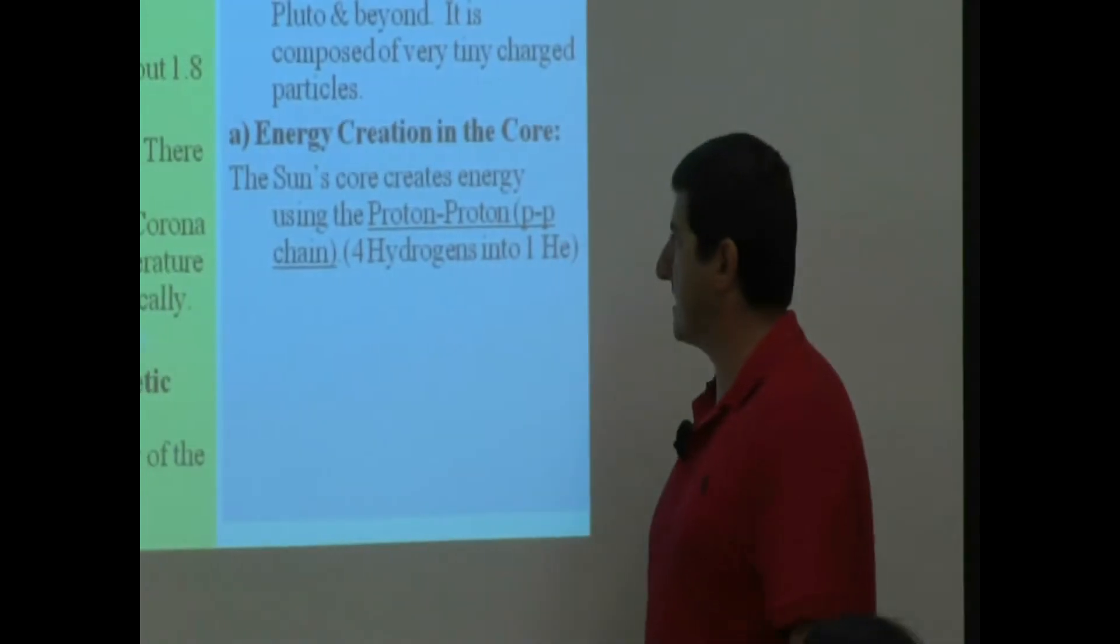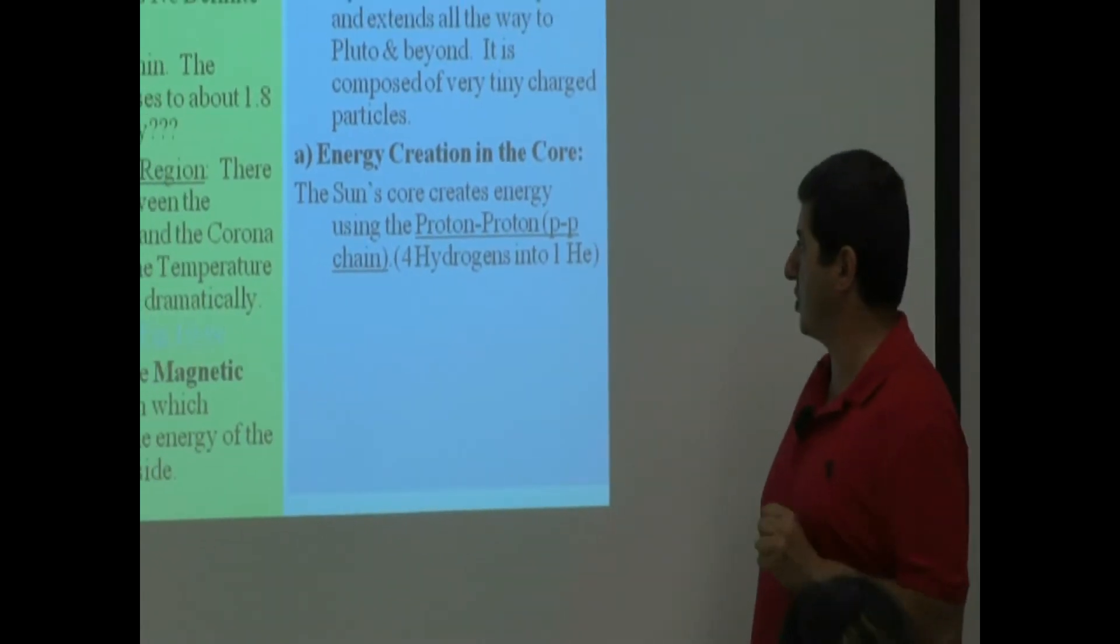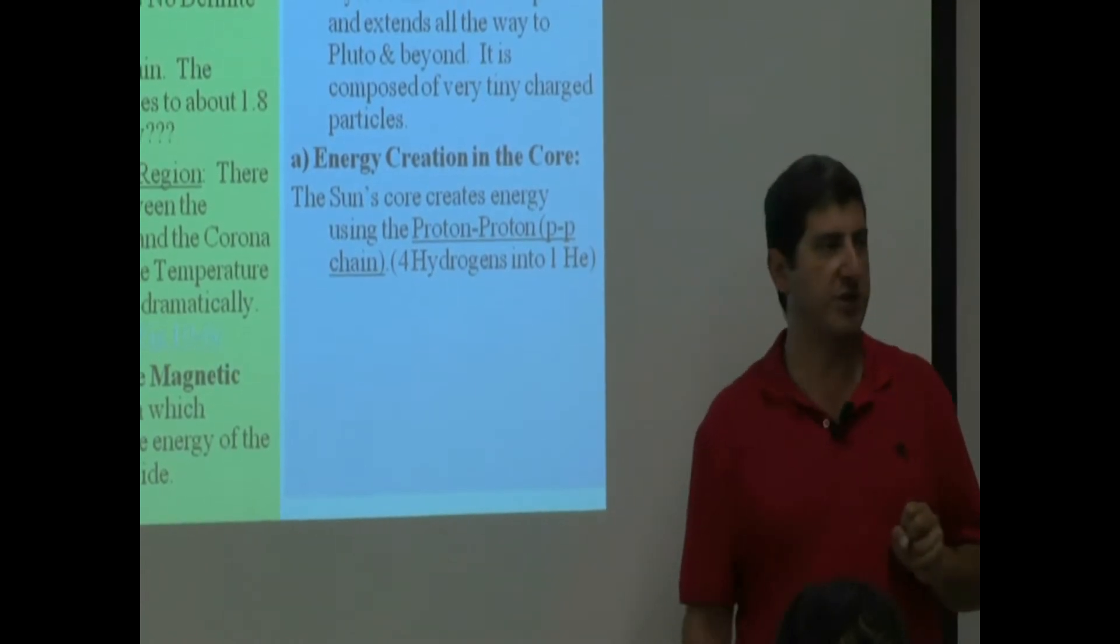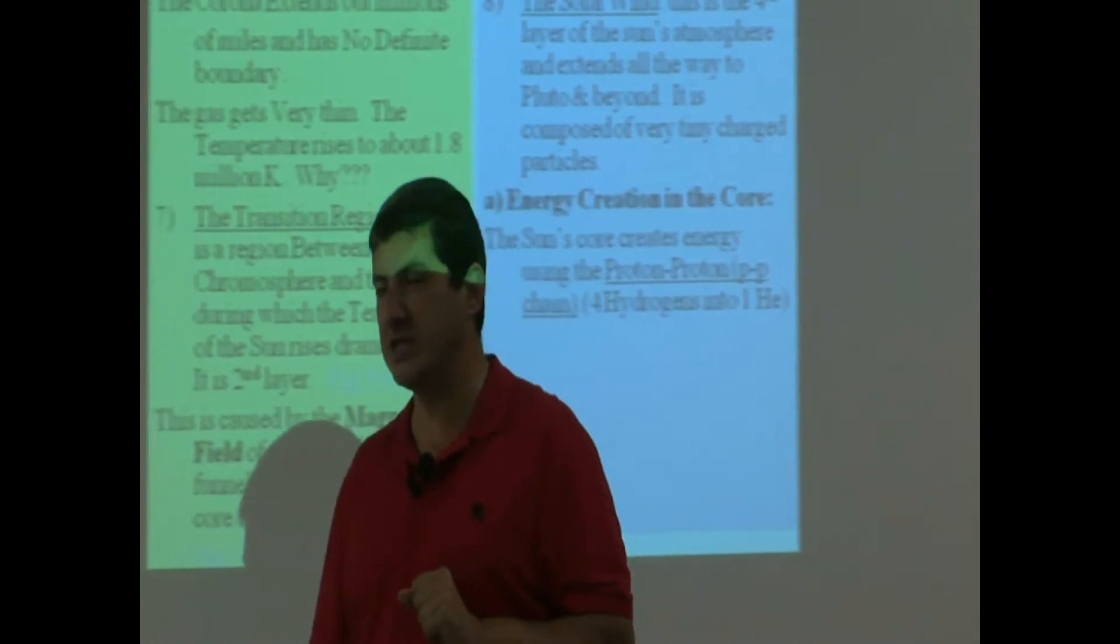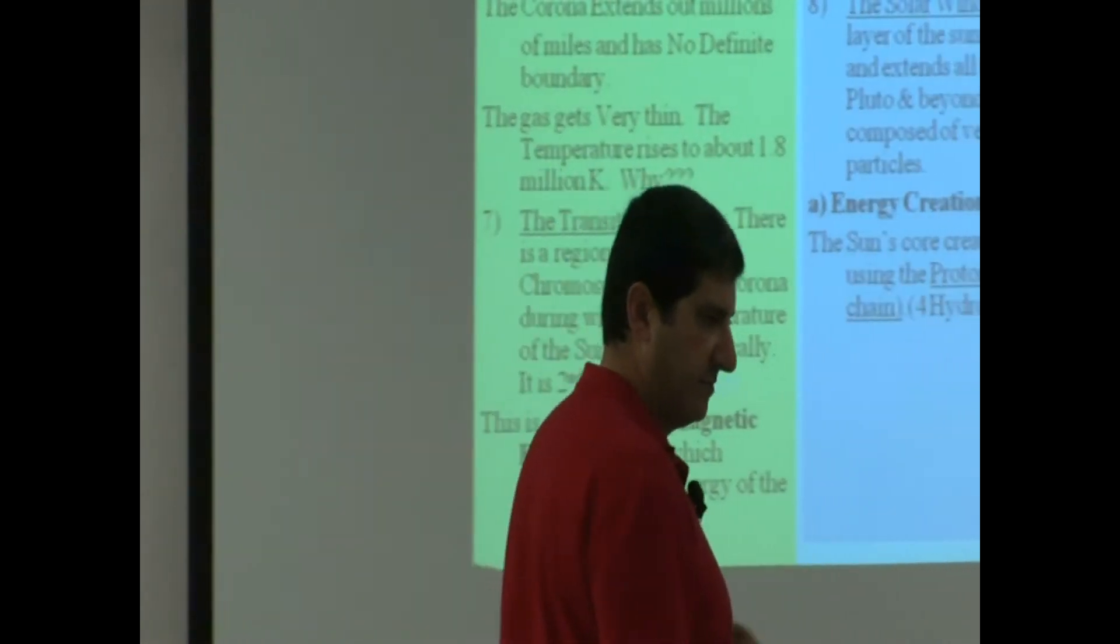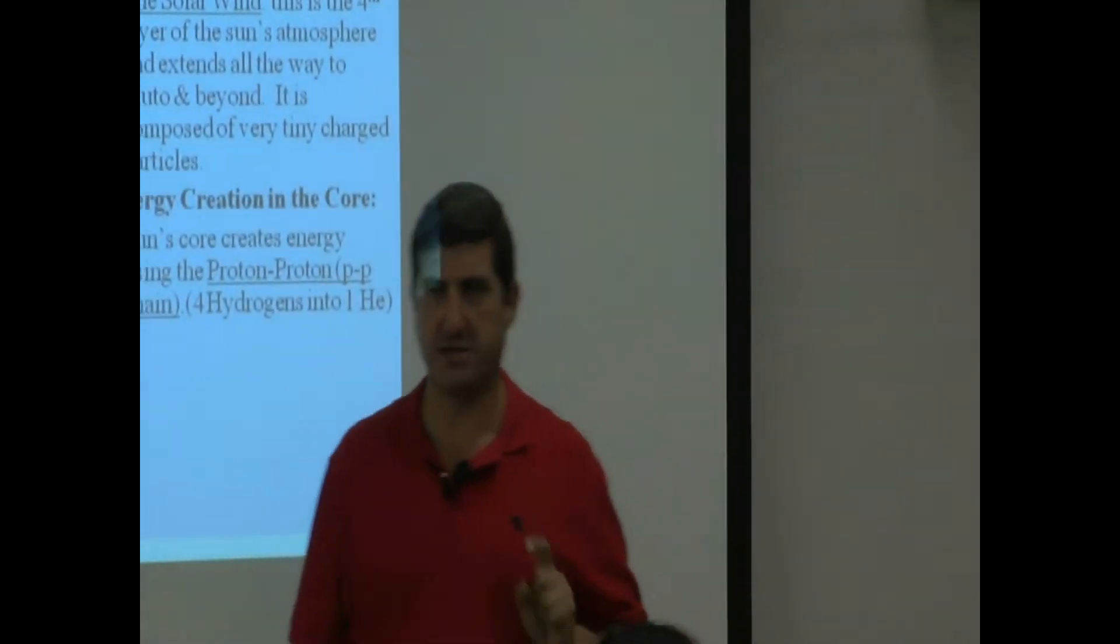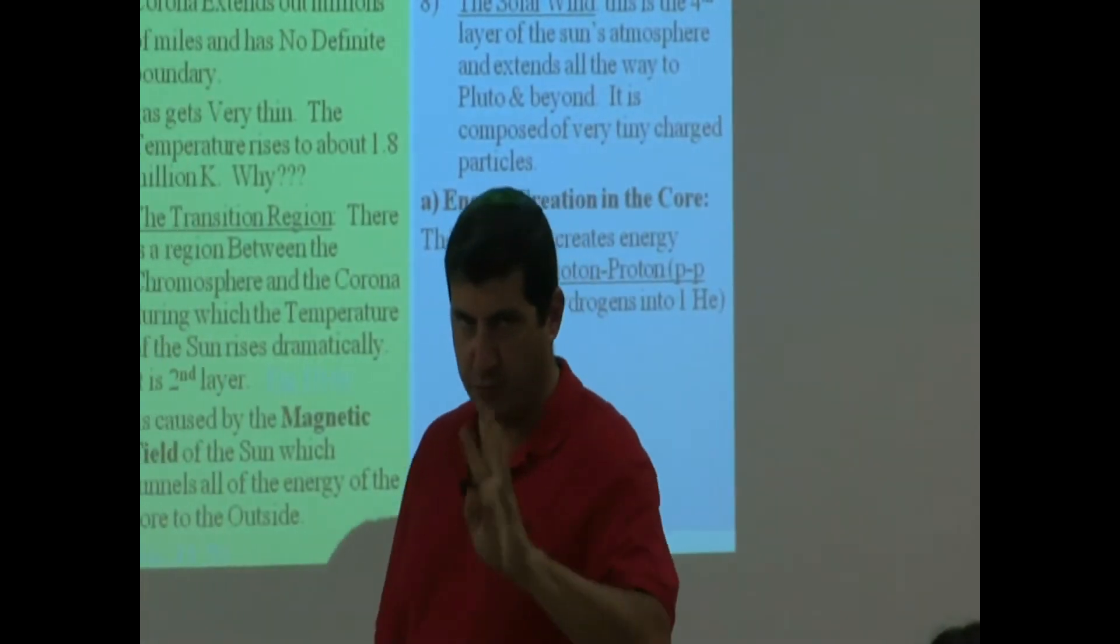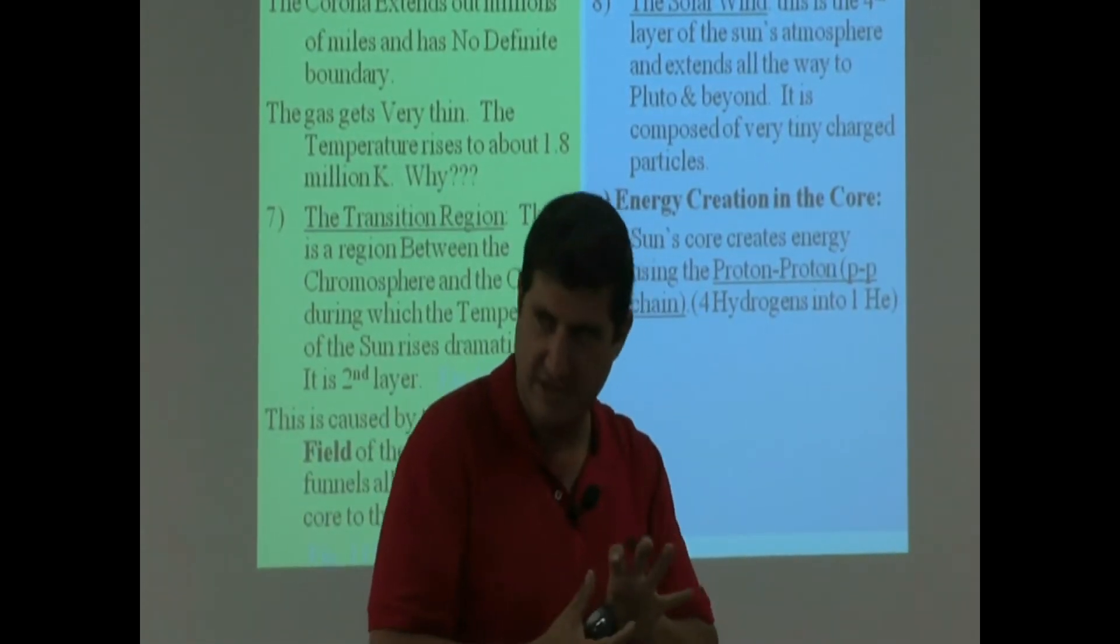The sun's core creates energy using a process that we now call the proton-proton chain, otherwise known as the PP chain. When your son, daughter, nephew, niece, or anyone in your family says, can I go pee-pee, tell them yes you can, but before you do, let me teach you what that means. That's when four protons combine and create helium.